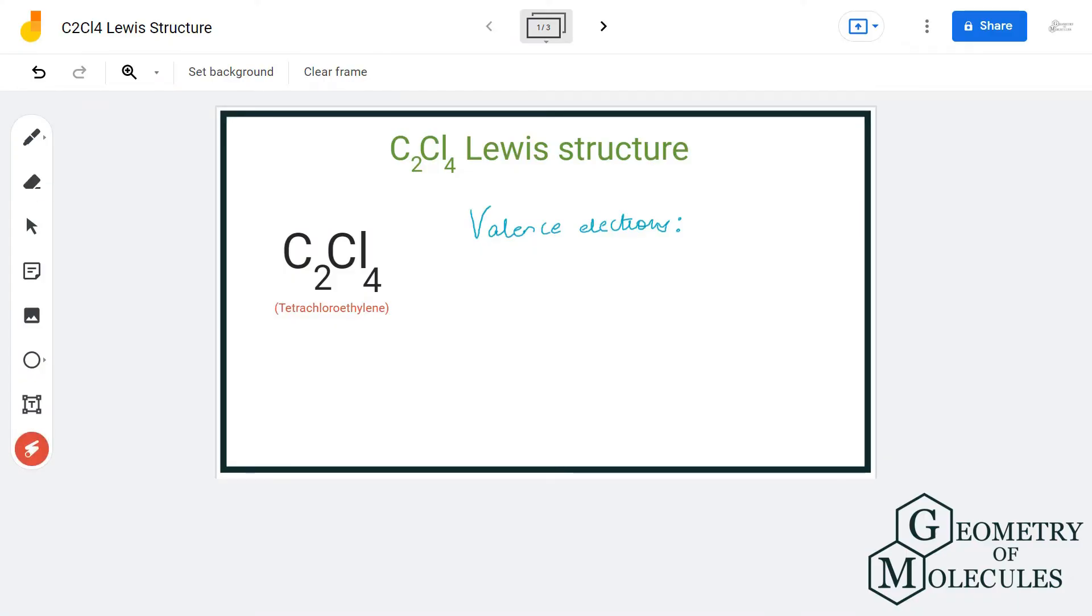Hi guys, welcome back to our channel. In today's video we are going to help you with C2Cl4 Lewis structure. It is a chemical formula for tetrachloroethane, and to determine its Lewis structure we will first look at the total number of valence electrons.